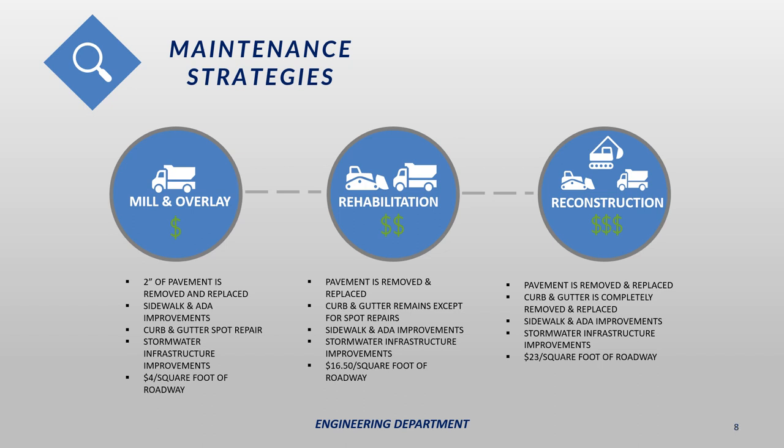The next type of project is what we call a rehab. This is where we will replace the entire pavement section but leave the curb and gutter largely in place. We will do spot repairs on the curb and gutter and make ADA updates and storm sewer improvements as well. This project is more involved than a mill and overlay and costs about $17 per square foot of roadway on average. A reconstruction is where we completely remove and replace the pavement and the curb and gutter. This is the most complex type of project we do, typically costing about $23 a square foot — about six times what a mill and overlay will cost.